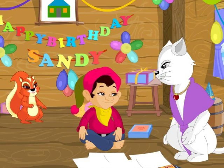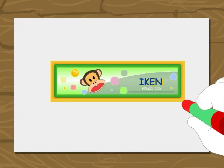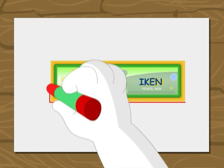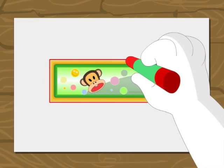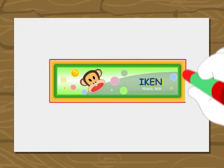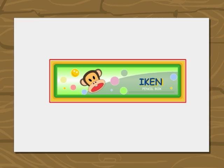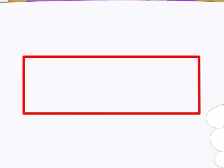Yes! Okay then. Amber, come here. We start tracing this pencil box by placing the crayon on any side of the box. The crayon should touch the side of the box. Now, draw the sides of the box by keeping the crayon near the box such that it is touching the box all the time. Remember that you should not lift the crayon till the tracing is complete. Can you recognize the shape? Yes, Miss Lucy. It is a rectangle.